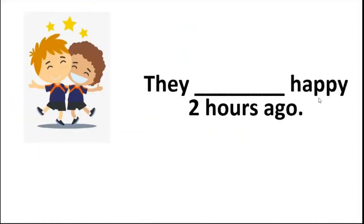They happy two hours ago: are, were, is. They is plural, so we can use are or were, but it says two hours ago, so it was in the past.